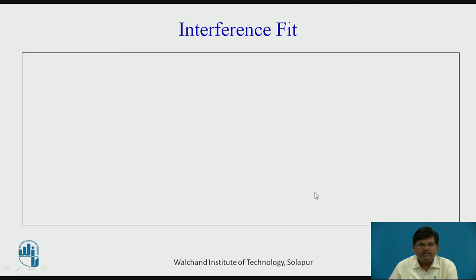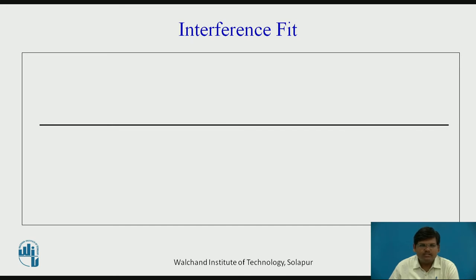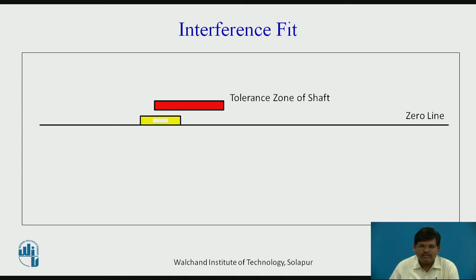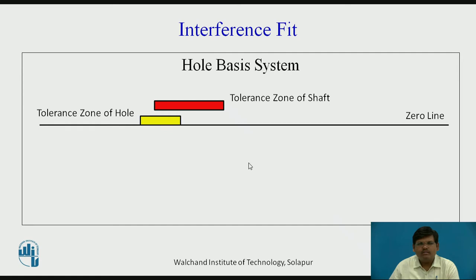Now let us see how interference fit is represented on the hole base system. Here, the minimum tolerance of the hole coincides with the zero line, whereas the tolerance zone of the shaft is above the tolerance zone of the hole. This system is called the hole basis system. I hope you are clear with both the hole base system and the shaft base system, and how interference fit is represented in each.